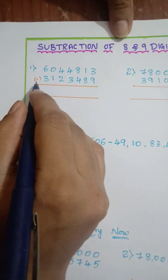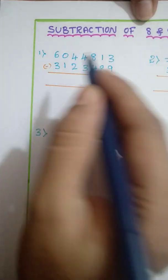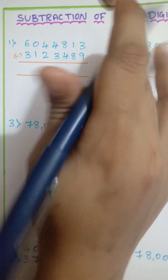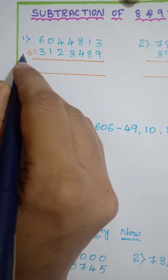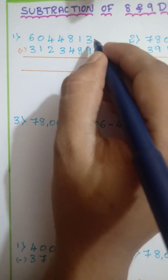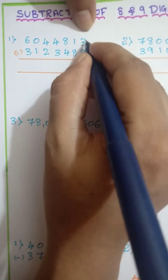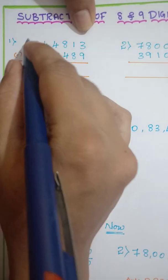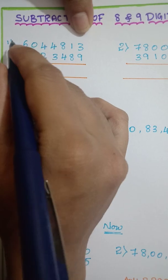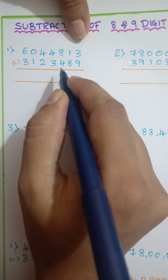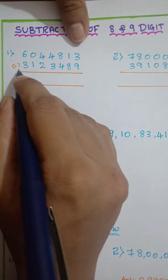Same as addition, in the subtraction also we do the operation from our right hand side. And the symbol we use for subtraction is minus. So now here this is the first number and this is the second number from first number which we write at the top. From that number the bottom number has to be subtracted.